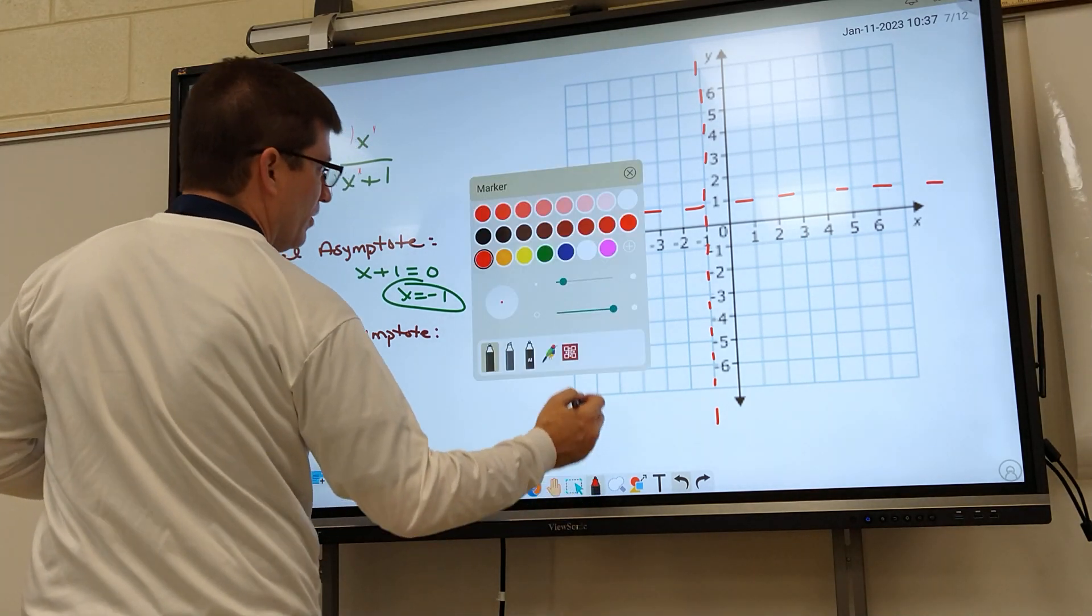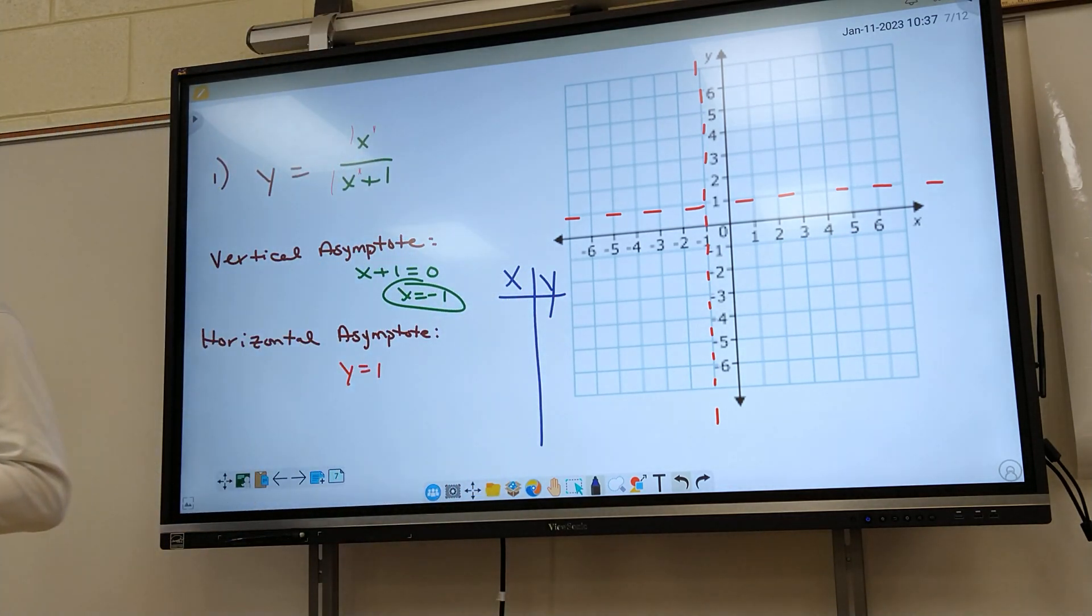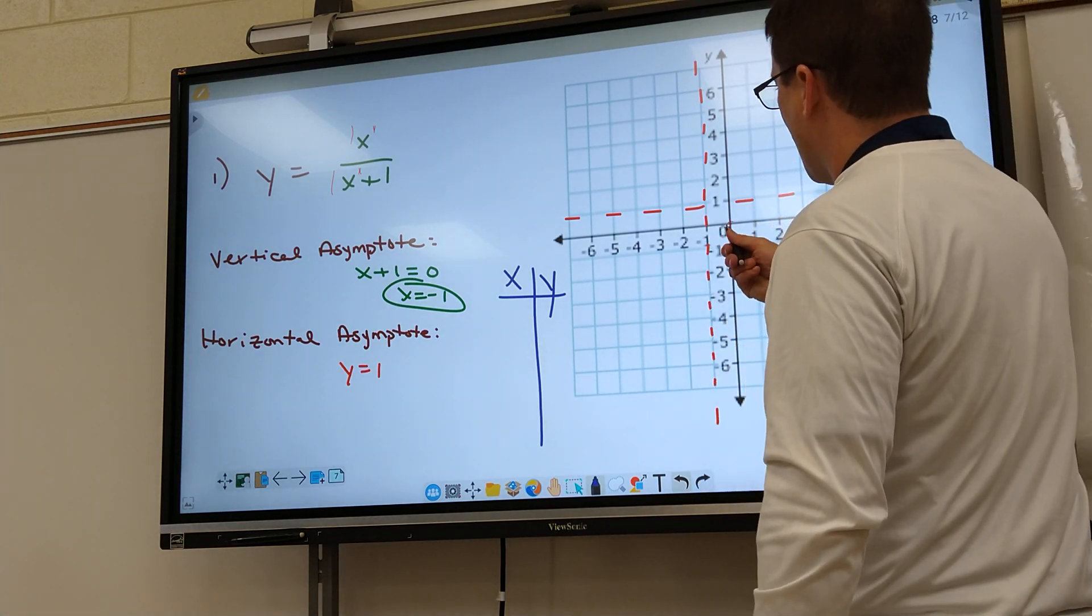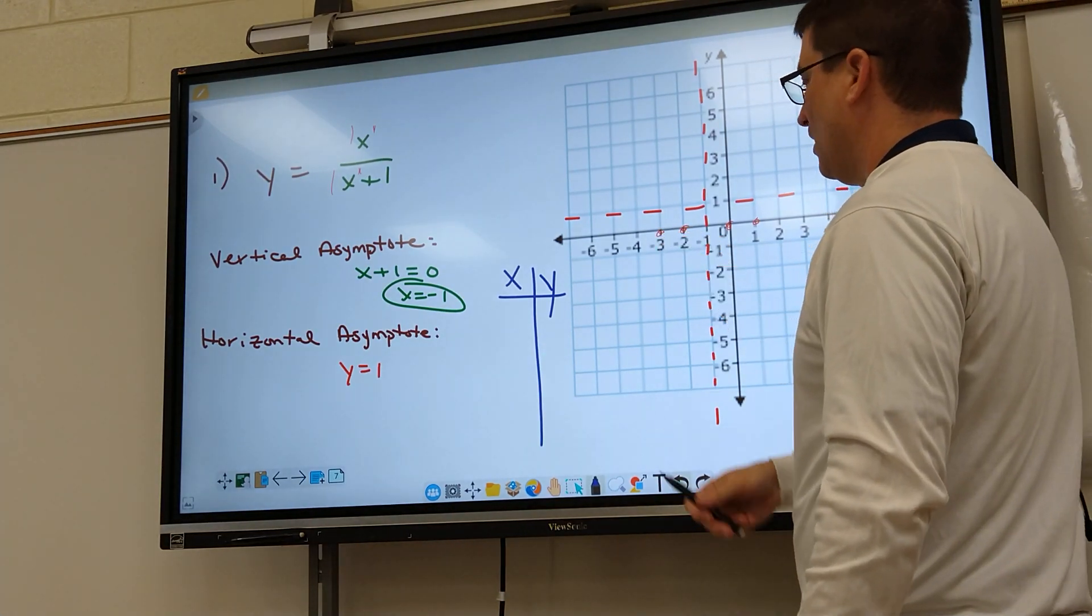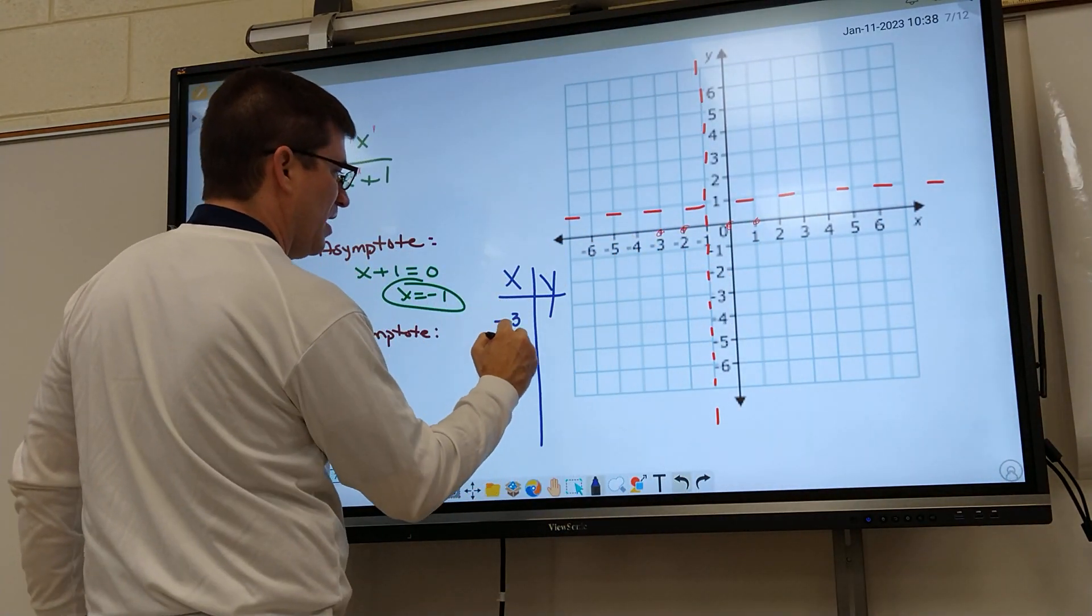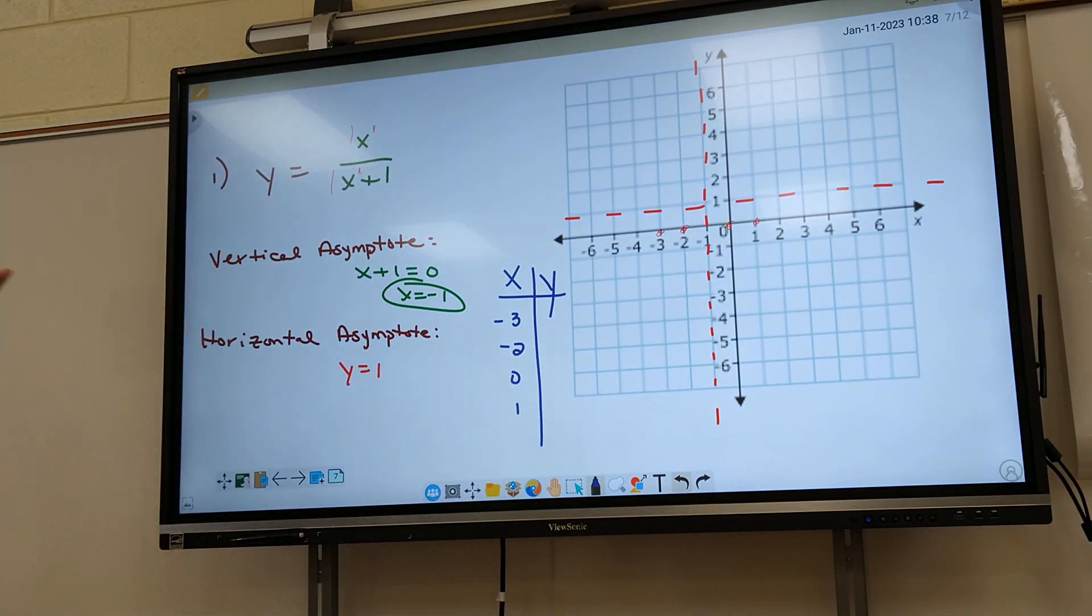Any question how I found either one of those? That's the hard part. The last part, we've got to plug in four numbers so we can graph this and know where the curves go. How do I pick my four numbers? It's easy. Two numbers on the right of your dotted line, zero and one. Two numbers on the left of your dotted line, negative two and negative three. We're going to choose those every time because those are closest to the center.